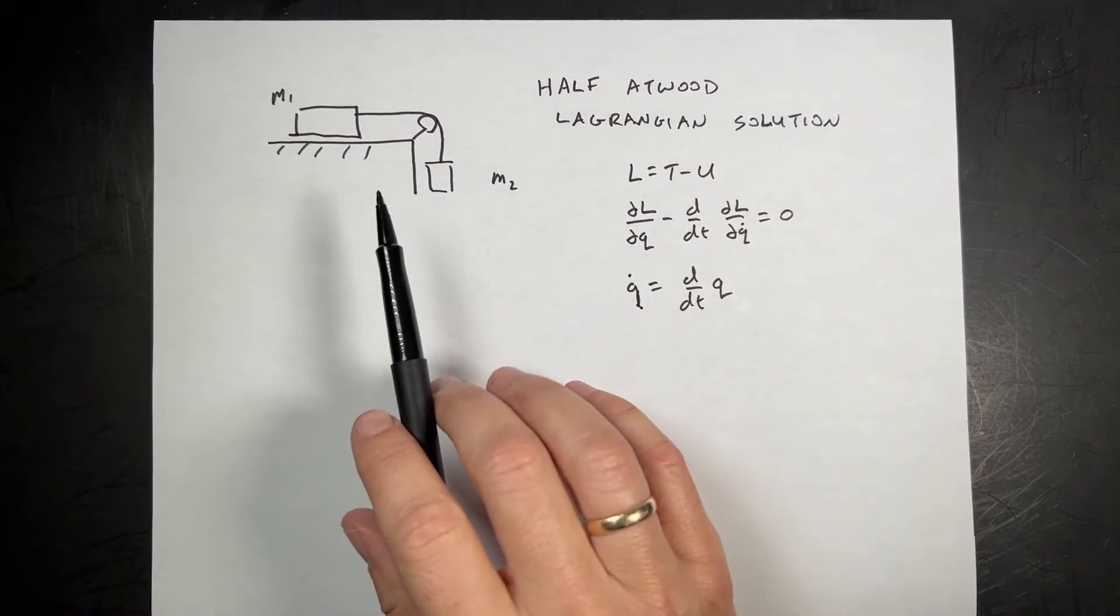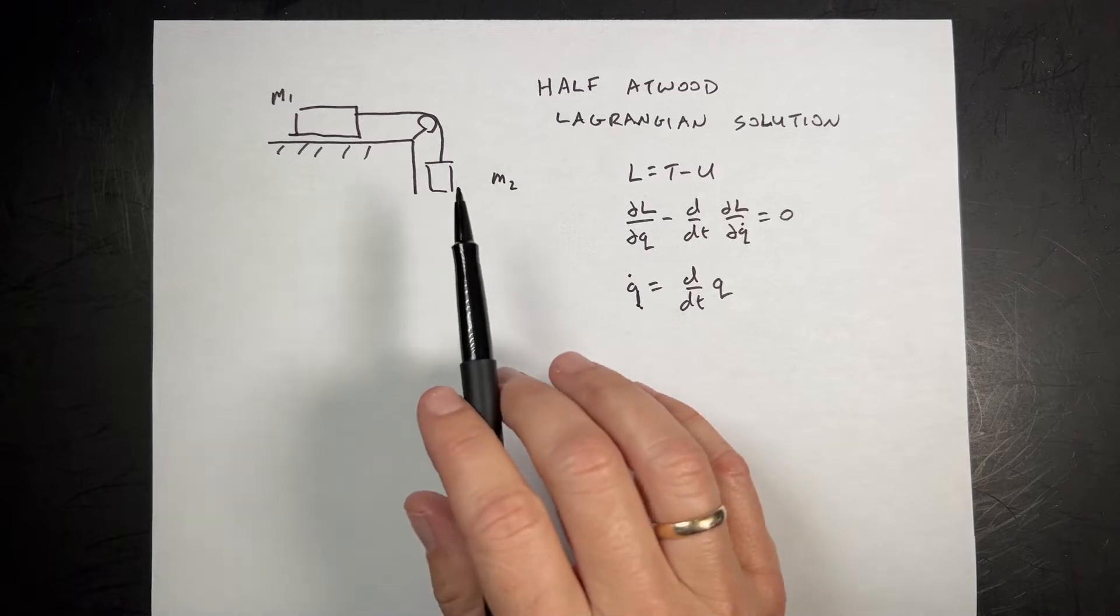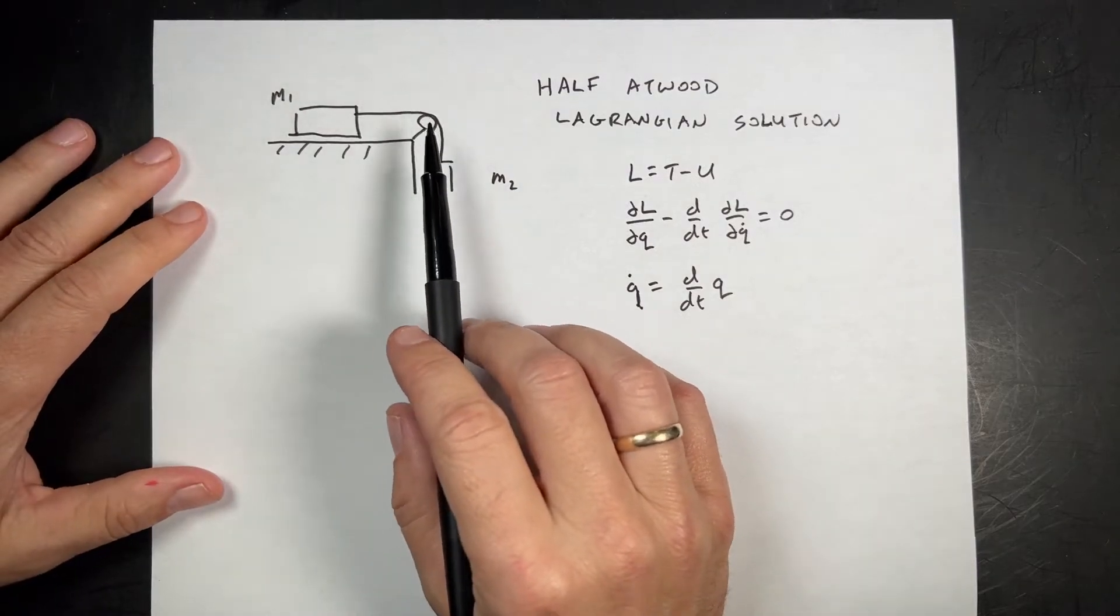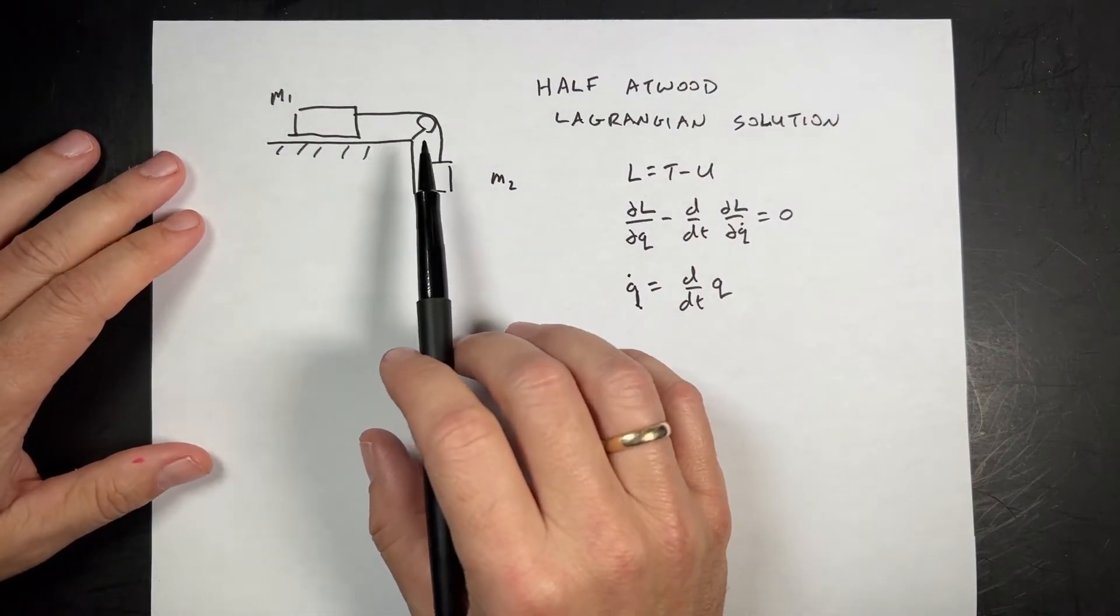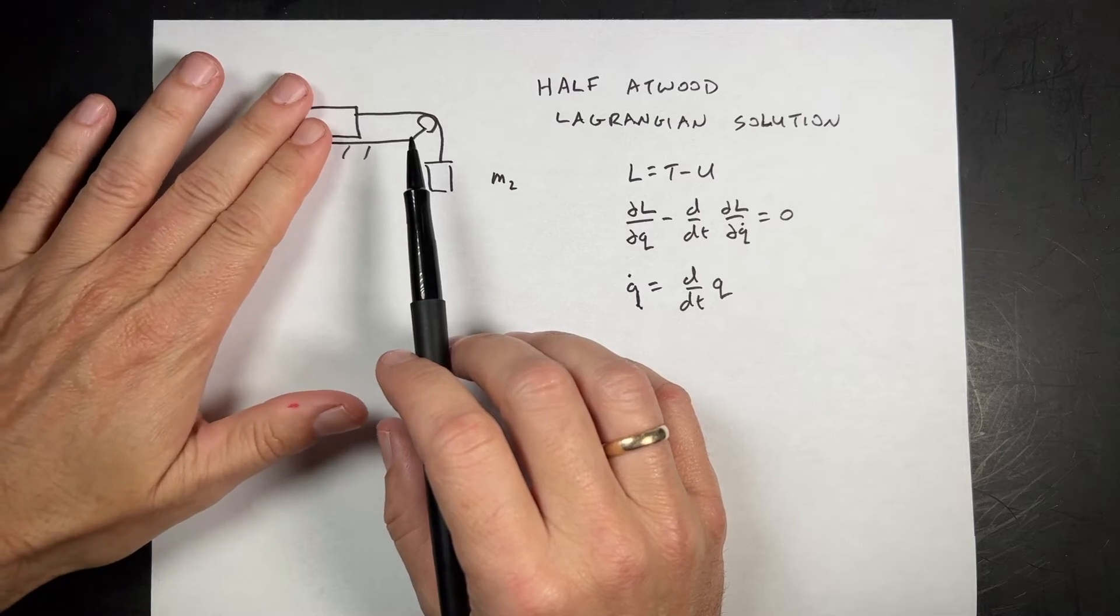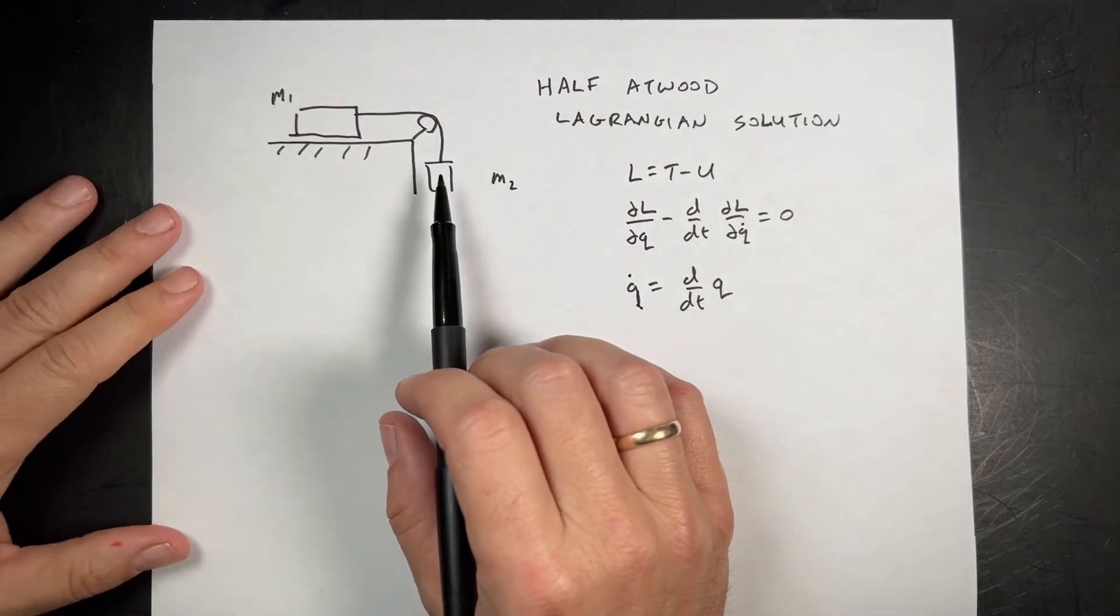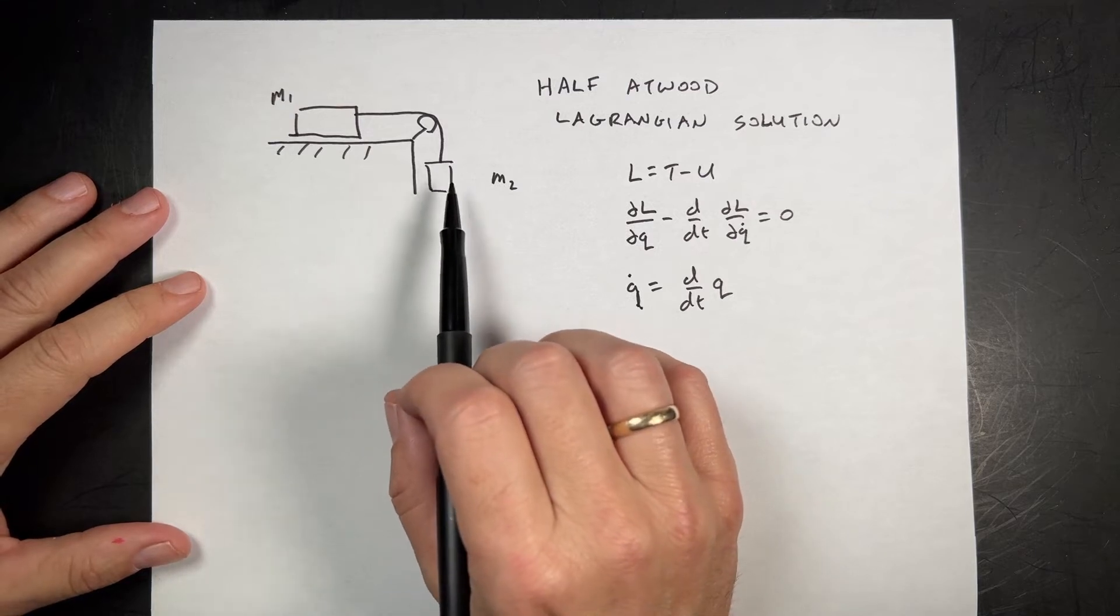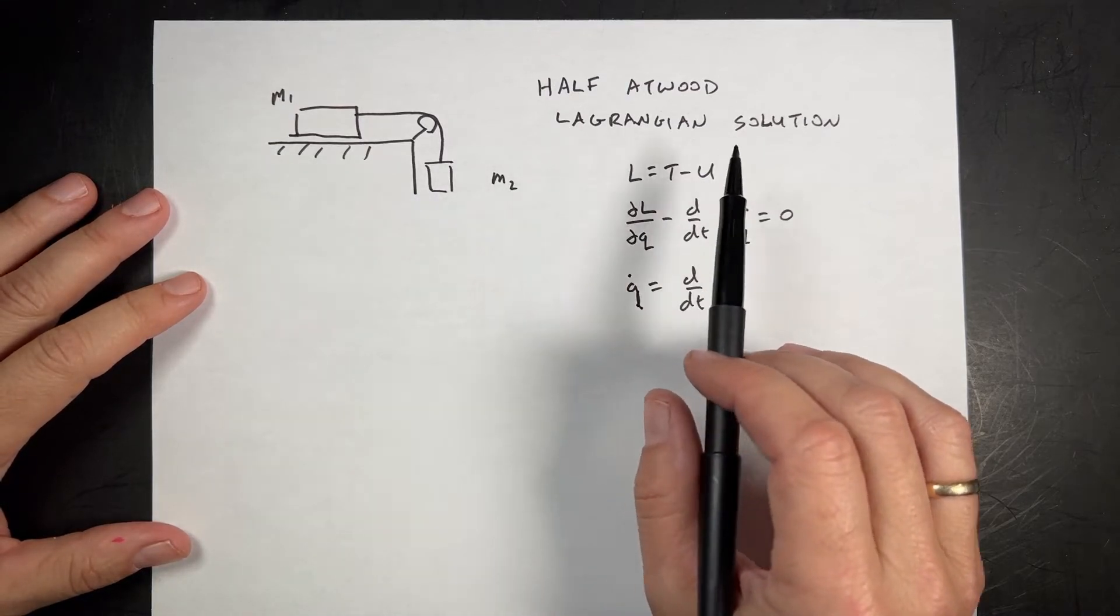The half Atwood machine is like an Atwood machine, but it's half of it. An Atwood machine has a pulley with two masses. In the half Atwood, one of those masses is sitting on a frictionless table, another one is hanging over the table. I'm going to come up with a solution for the equation of motion of this using Lagrangian mechanics.